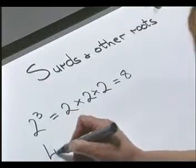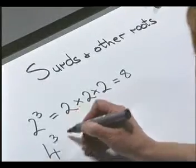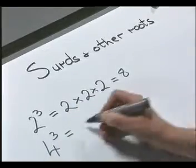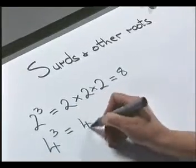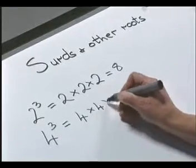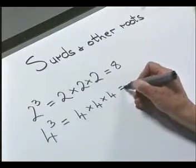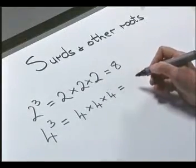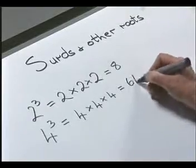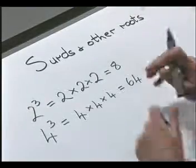If we had 4 cubed, that is 4 times 4 times 4, and we know when that's worked out, it's 64. But what if we have 4 to the negative 3? What would be its value, and how could we put it down more neatly?